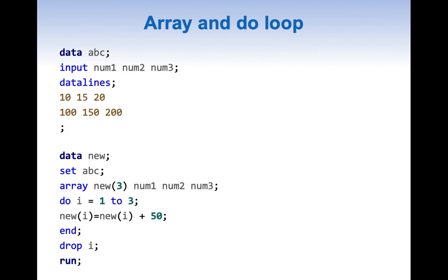There is one key important thing here. There are three elements in this array: the first element is num1, the second is num2, and the third is num3. This is very important to understand, and I will tell you why in a second.